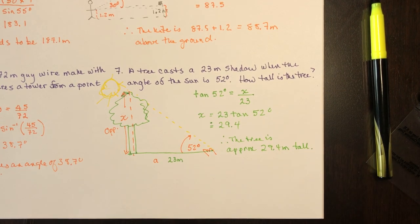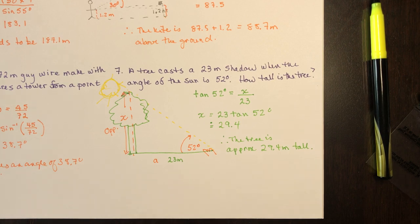And there you go — there are your first seven word problems. The next few will get a little more difficult, but I hope you found this helpful and completely understand elevation and depression angles. If you haven't subscribed, please do. Keep math free for everyone. Bye for now.